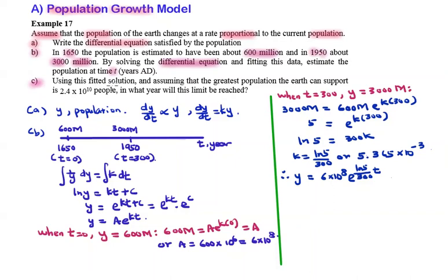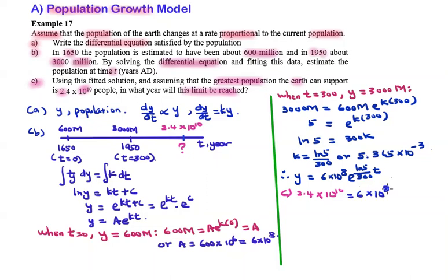Using this fitted solution and assuming the greatest population the earth can support is 2.5×10^10 people — in what year will this limit be reached? If the population reaches 2.4×10^10 people, we substitute y as 2.4×10^10, equal to 6×10^8 times e raised to the power ln(5) divided by 300. Our target is to find t.